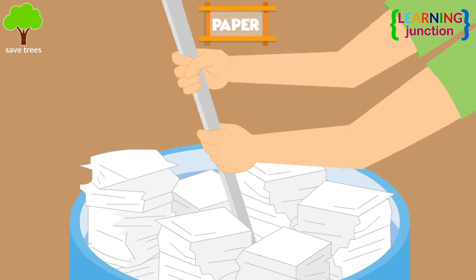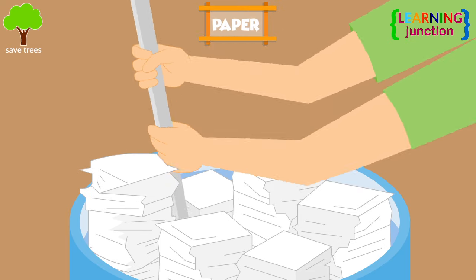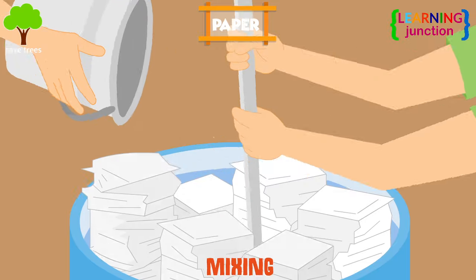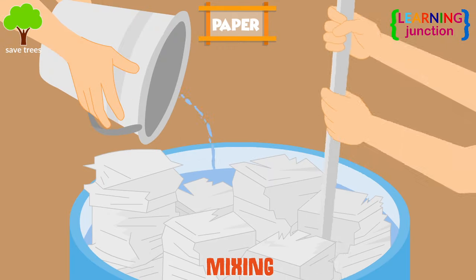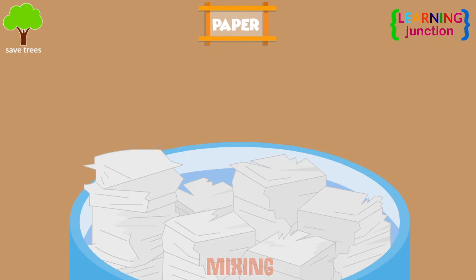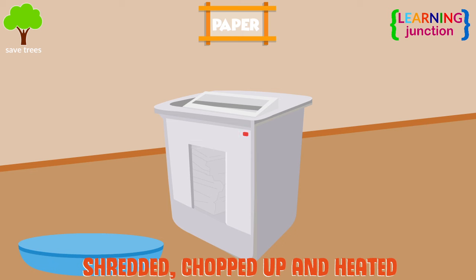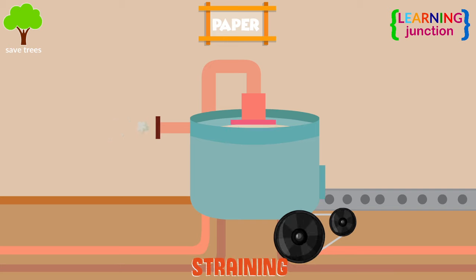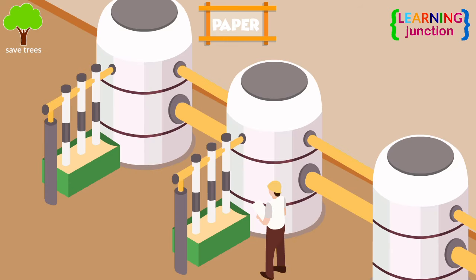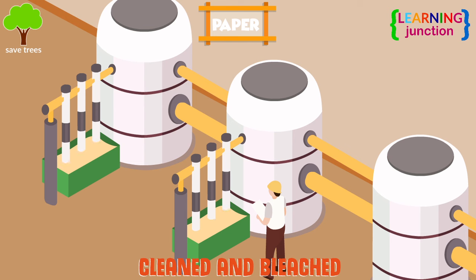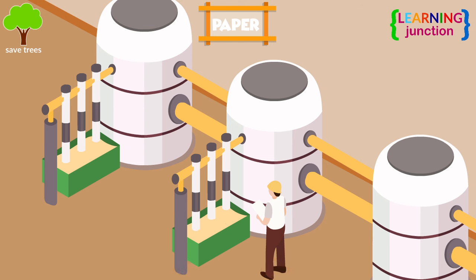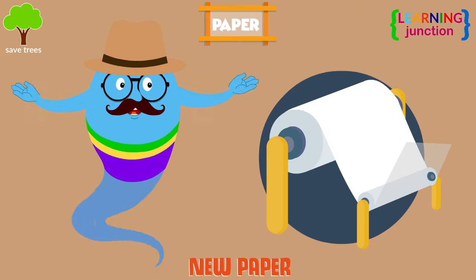Paper. The process of waste paper recycling involves mixing used or old paper with water and chemicals to break it down. It then gets shredded, chopped up and heated. This process turns the paper into a slurry. It gets strained in order to remove any plastics or glues. Then it gets cleaned and bleached to remove any leftover dyes. New paper can be made with this cleaned pulp.